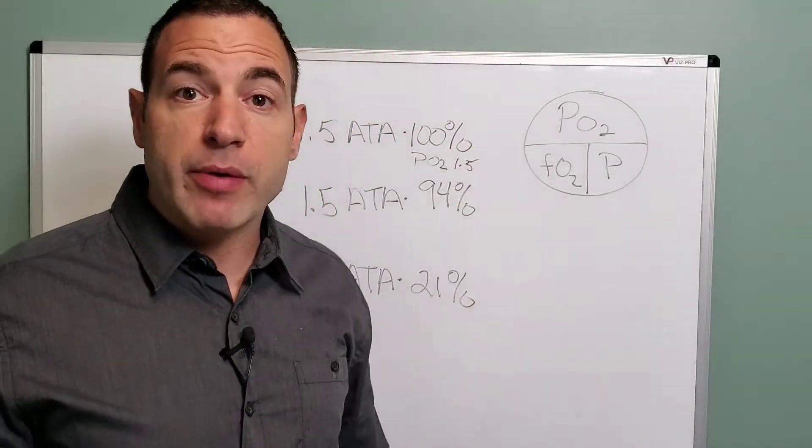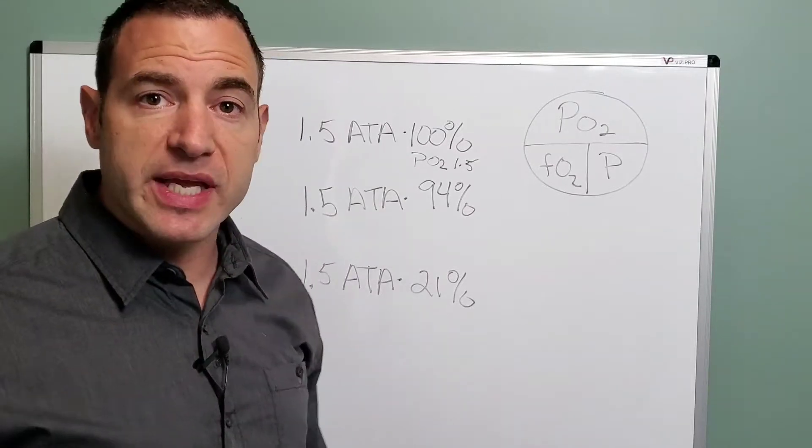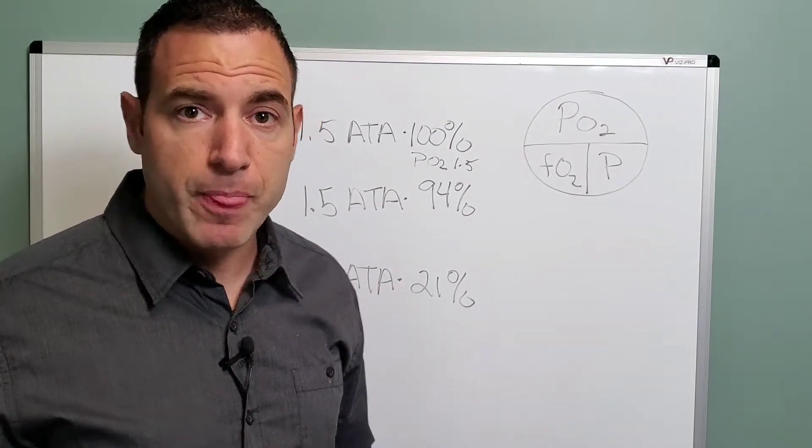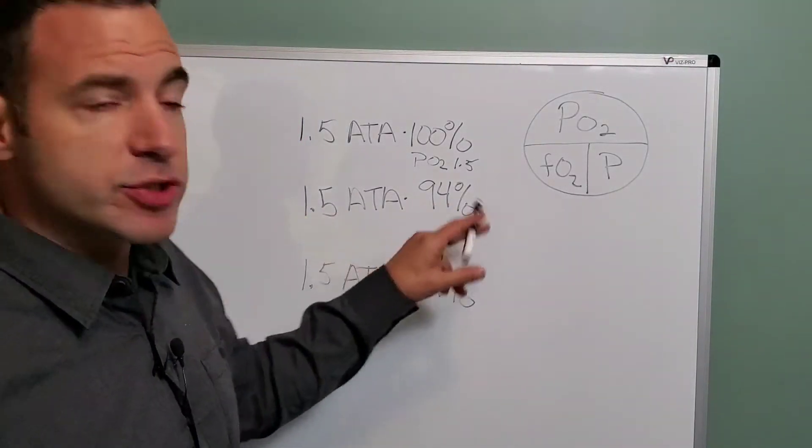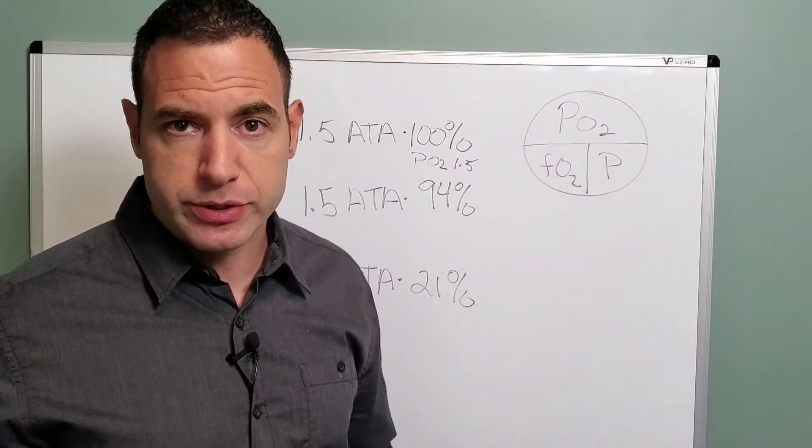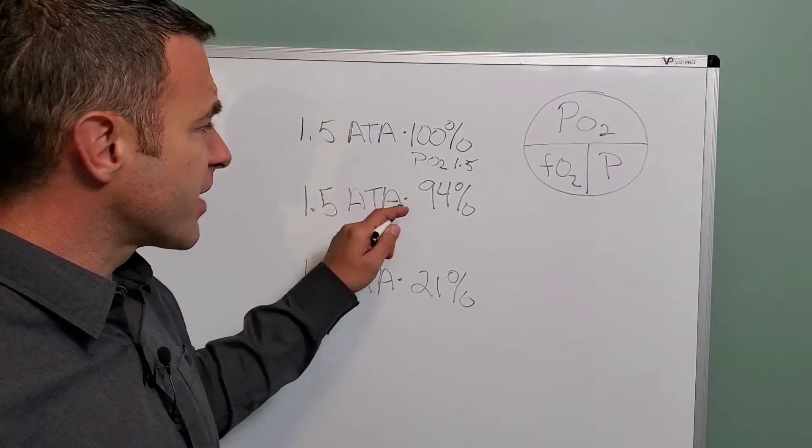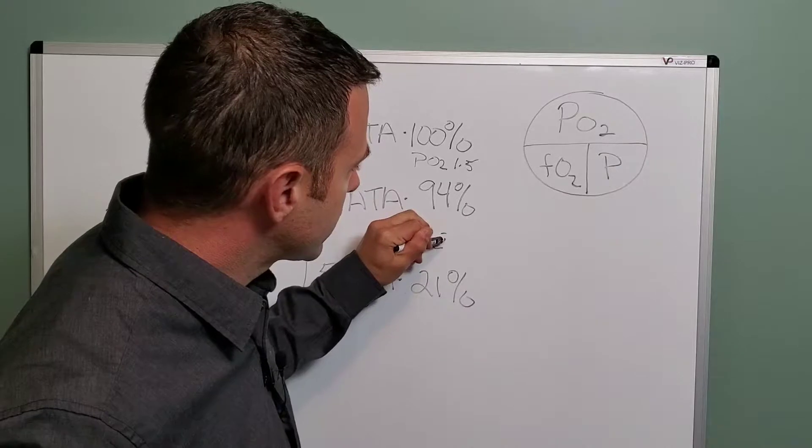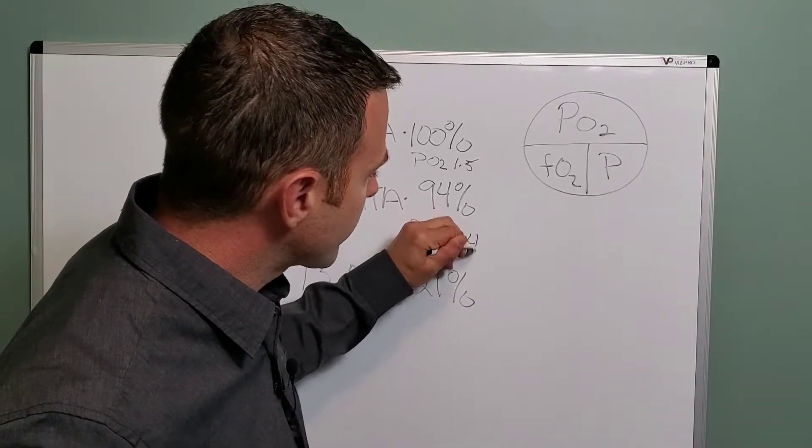So if that was the recommendation or the protocol for the patient, but let's say instead of 100% oxygen, we only had an oxygen concentrator. So let's just say that oxygen concentrator put out about 94% oxygen. Well, 1.5 at 94%, that PO2 equals 1.4.